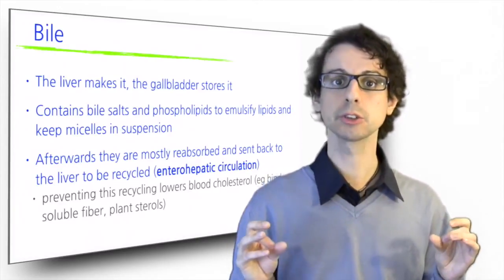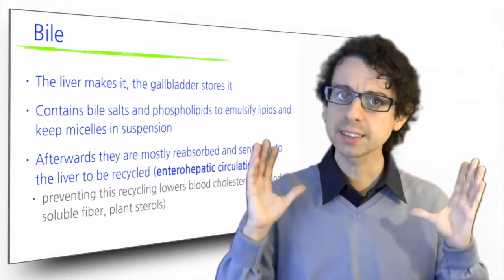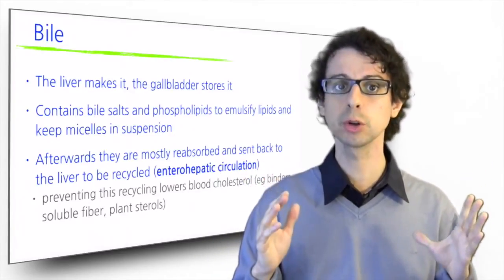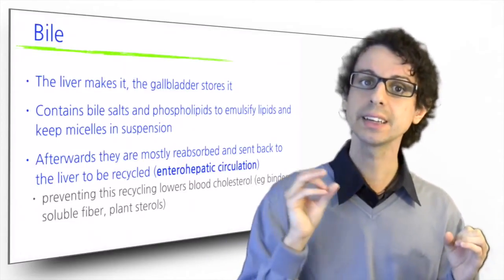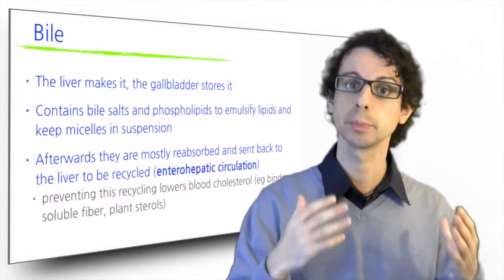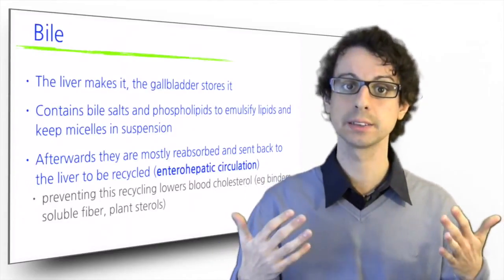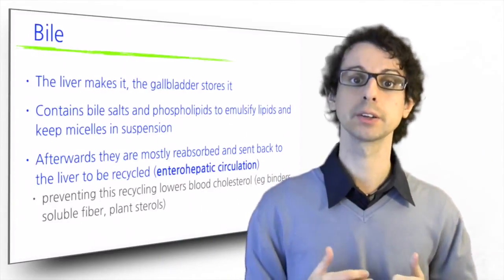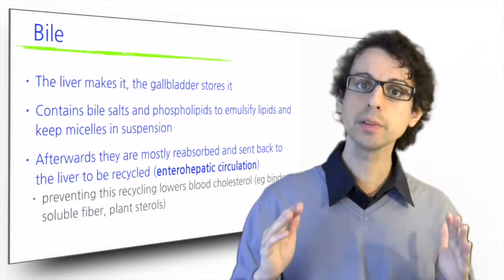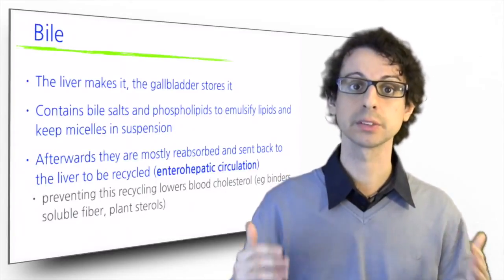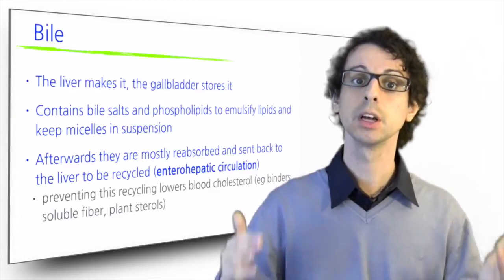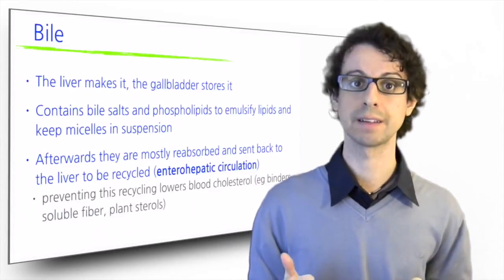The enterohepatic circulation of bile salts is targeted by a class of cholesterol-lowering drugs called binders. By preventing their reabsorption so that they cannot be recycled, the liver will have to use new cholesterol to make new bile salts, thus lowering blood cholesterol levels. Soluble fiber in food and plant sterols have a very similar effect and are both able to lower blood cholesterol levels.